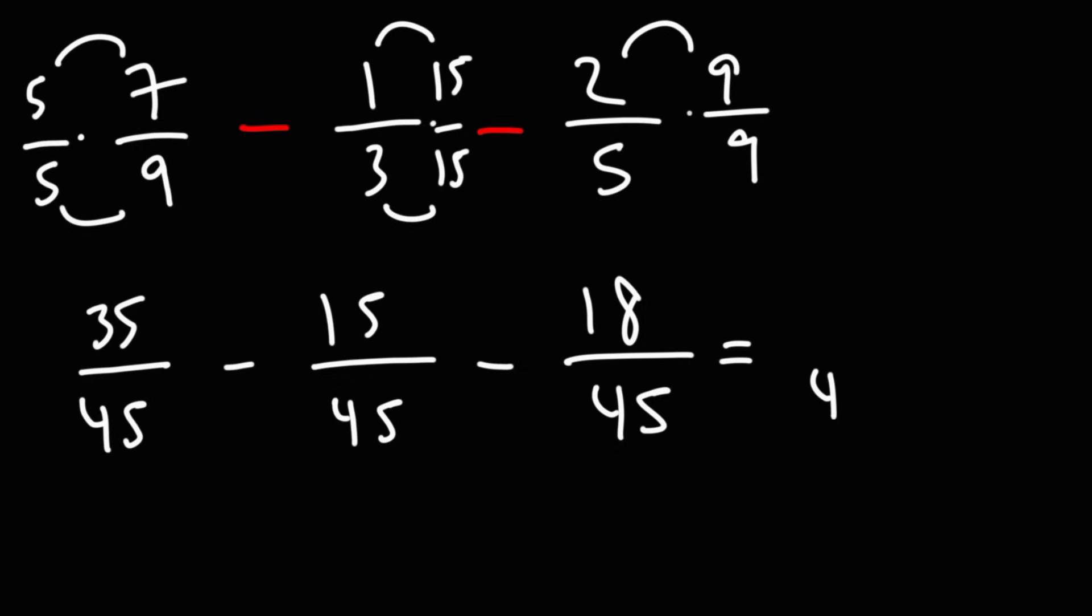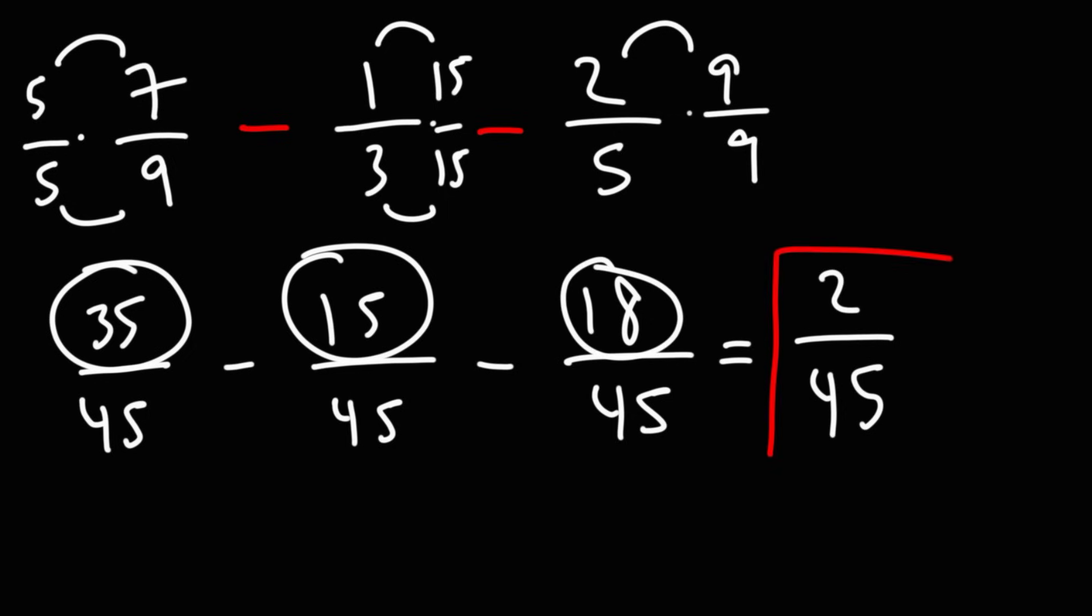So now that we have the same denominator, we could subtract the numerators. 35 minus 15 is 20. 20 minus 18 is 2. So the answer is going to be 2 over 45.